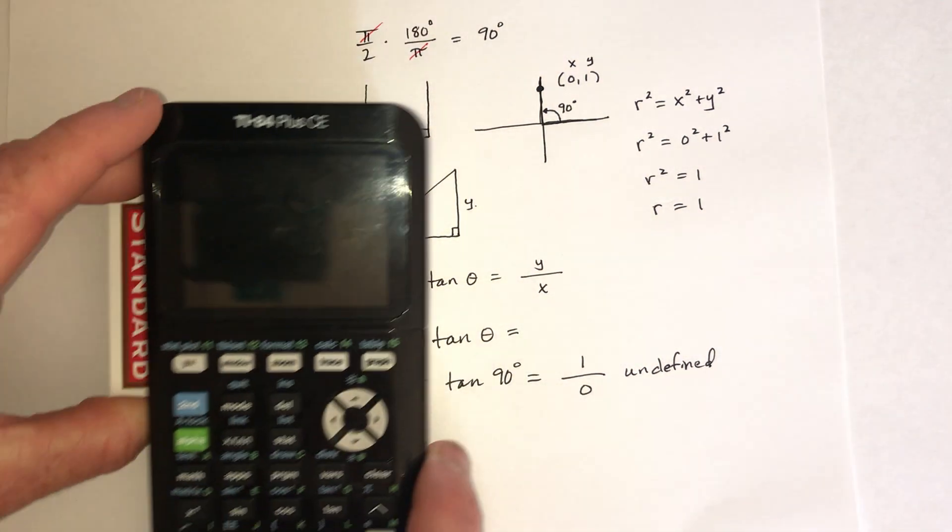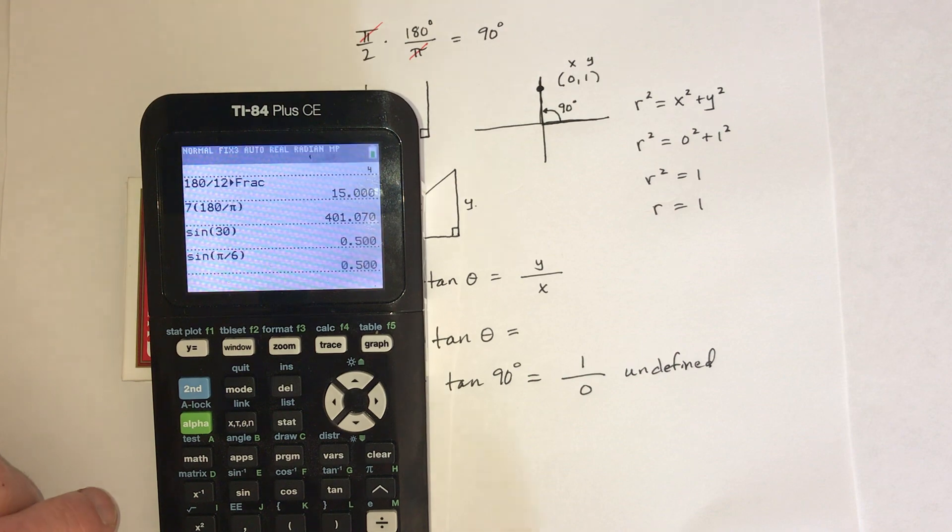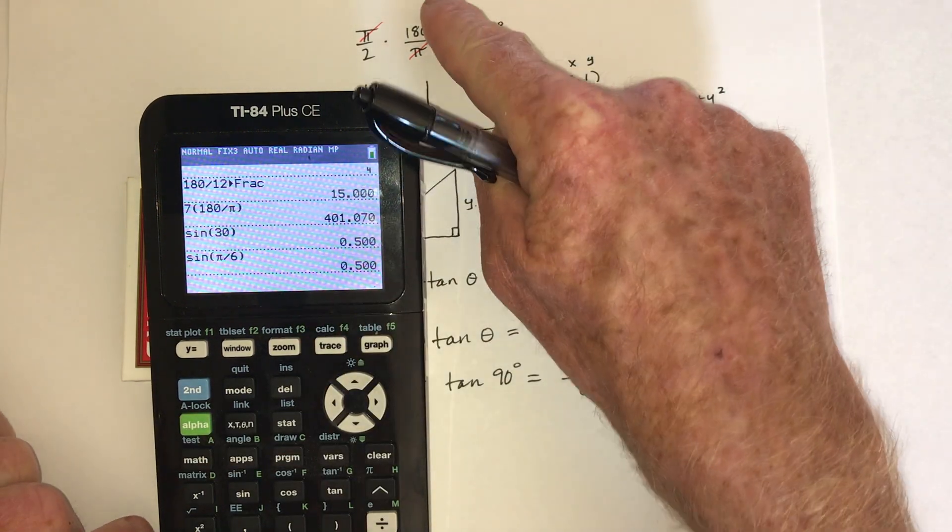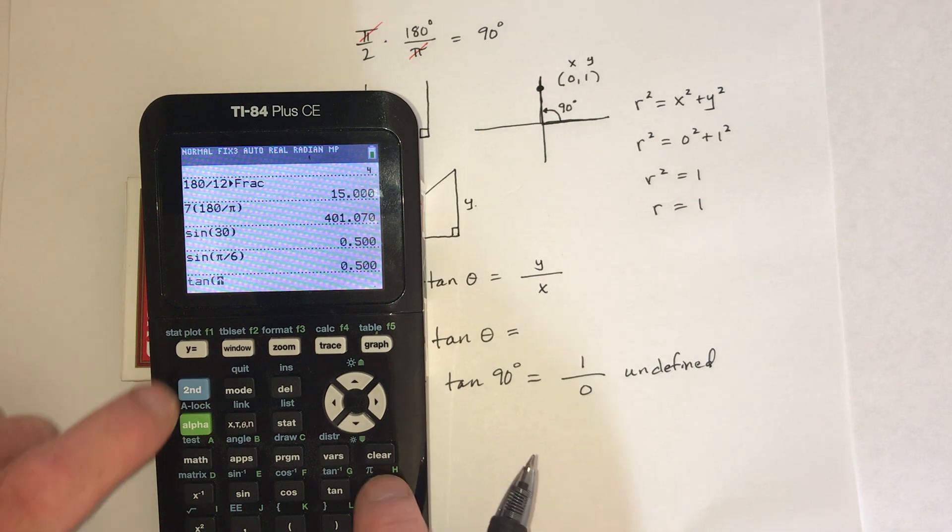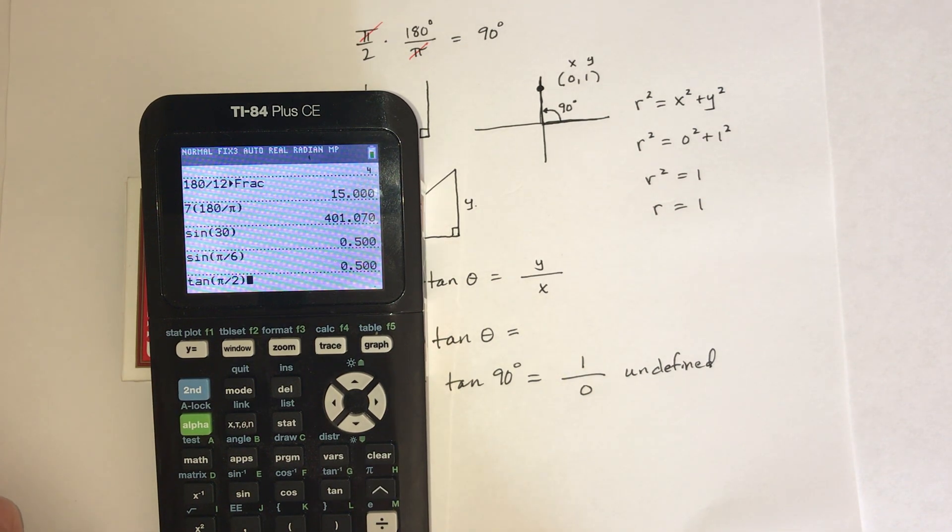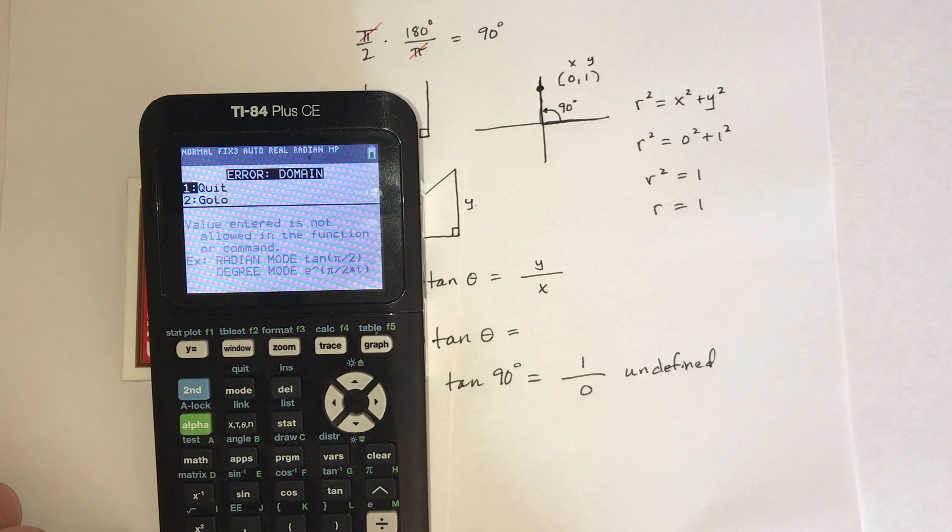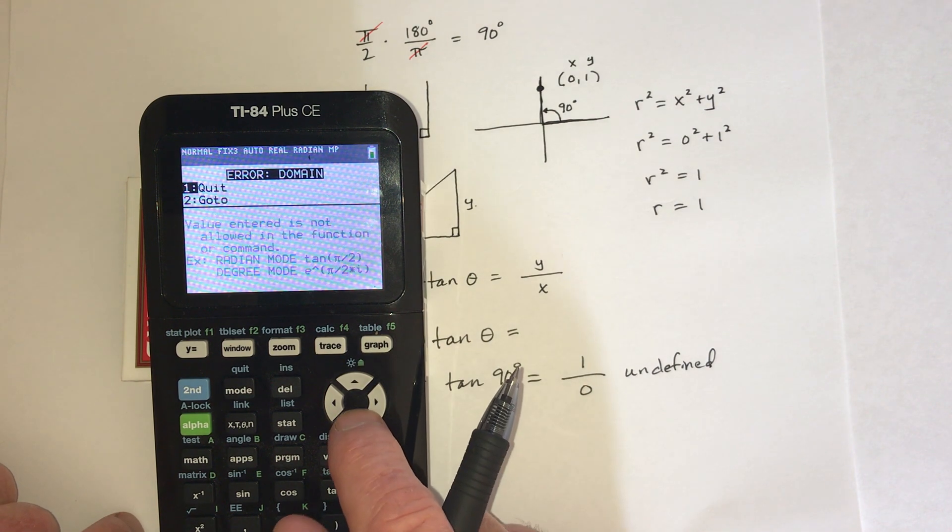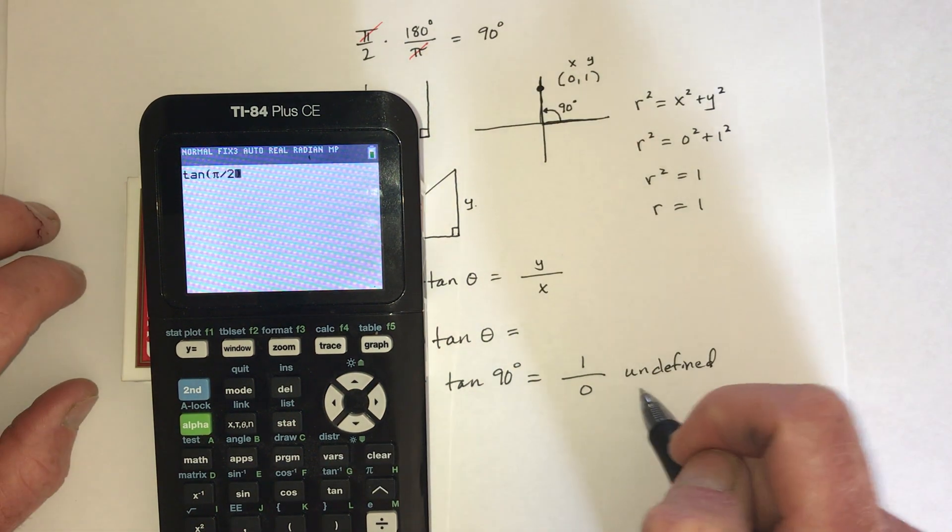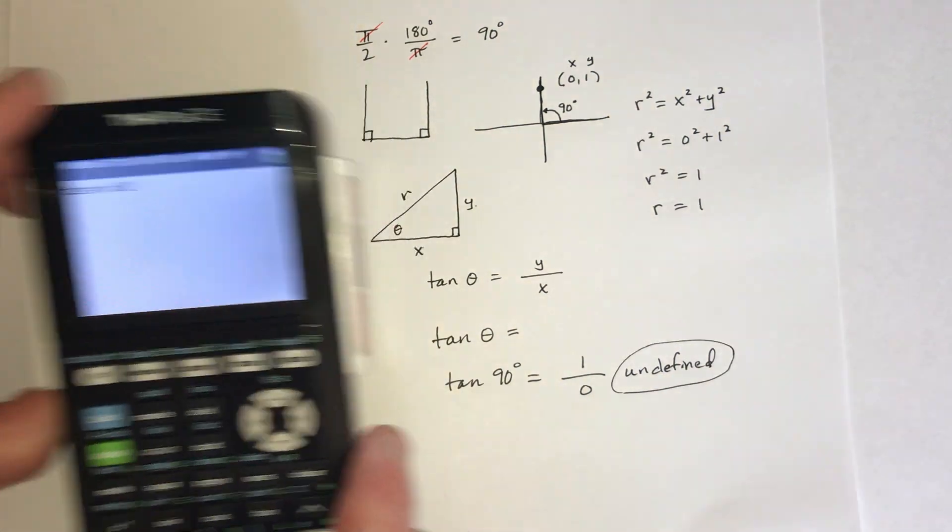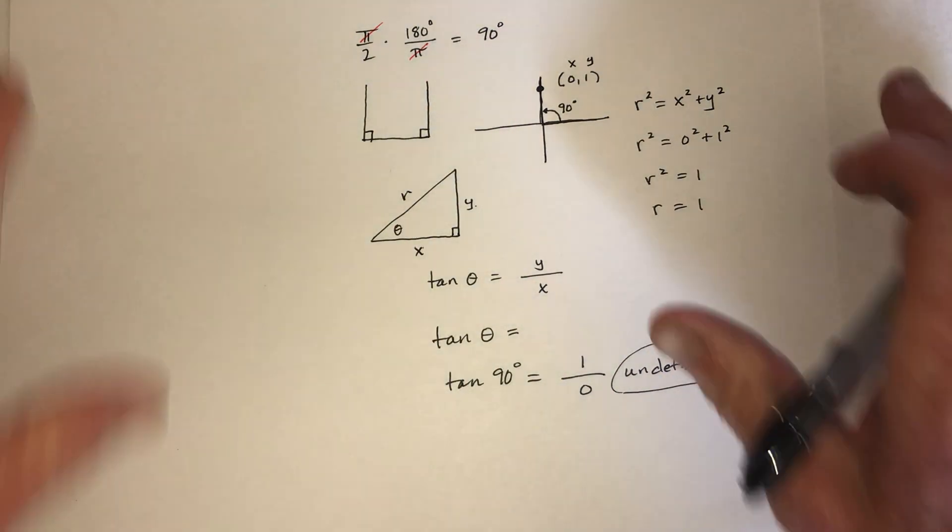And that causes division by 0, so that means it's undefined. Now let's see what the calculator has to say about that. So right now I'm in radian, so I could just do the original problem, which said what's tangent of pi over 2? And what does the calculator think about that? That that is an error. It's not in the domain. So if you put go to, it's going to say this pi over 2 thing, I don't like it. It's undefined.